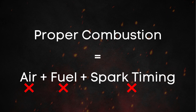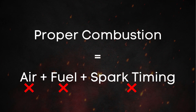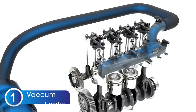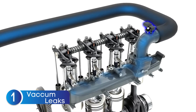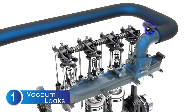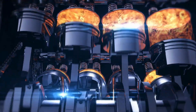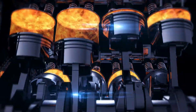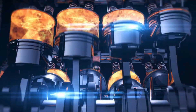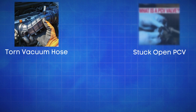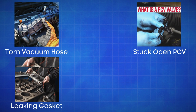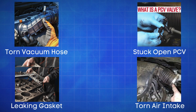Now let's dive into some factors that can affect the air, fuel, or spark. First up, vacuum leaks. A vacuum leak allows unmetered air to enter the engine. This extra air throws off the air-fuel ratio, causing the mixture to run too lean, which leads to misfires. Some common locations for vacuum leaks include a torn vacuum hose, a stuck-open PCV valve, a leaking intake manifold gasket, or anything torn in the air intake system after the MAP sensor.